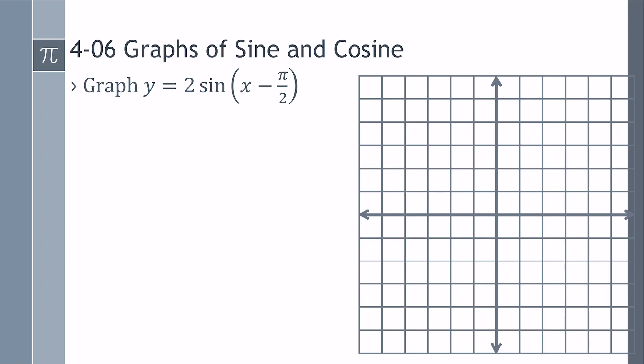All right, let's graph Y equals 2 sine of X minus pi over 2. So we have an A, and we have a C. So we know our amplitude is 2. And we know C is pi over 2. Because remember, it's X minus C.